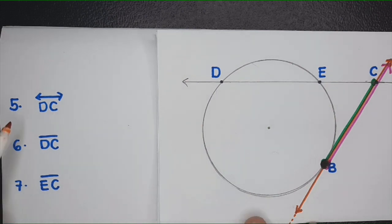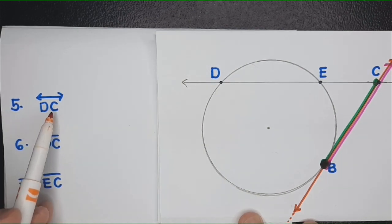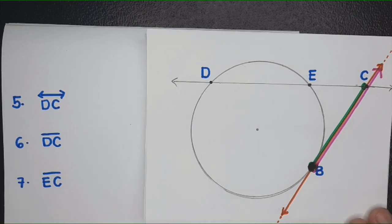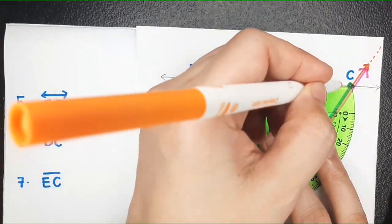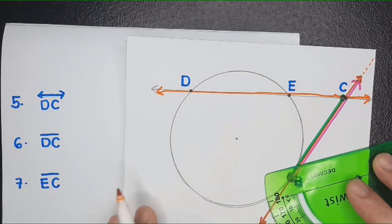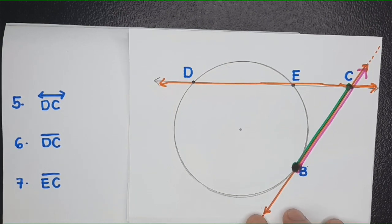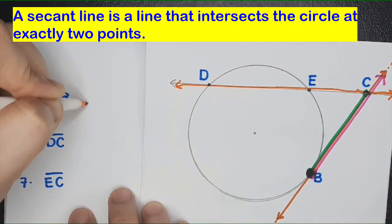So, where is line DC? It extends endlessly in both directions. Let me trace it again — this is the line DC. What do you call that line? It is a secant line, because it touches the circle at exactly two points. This is what we call the secant line.